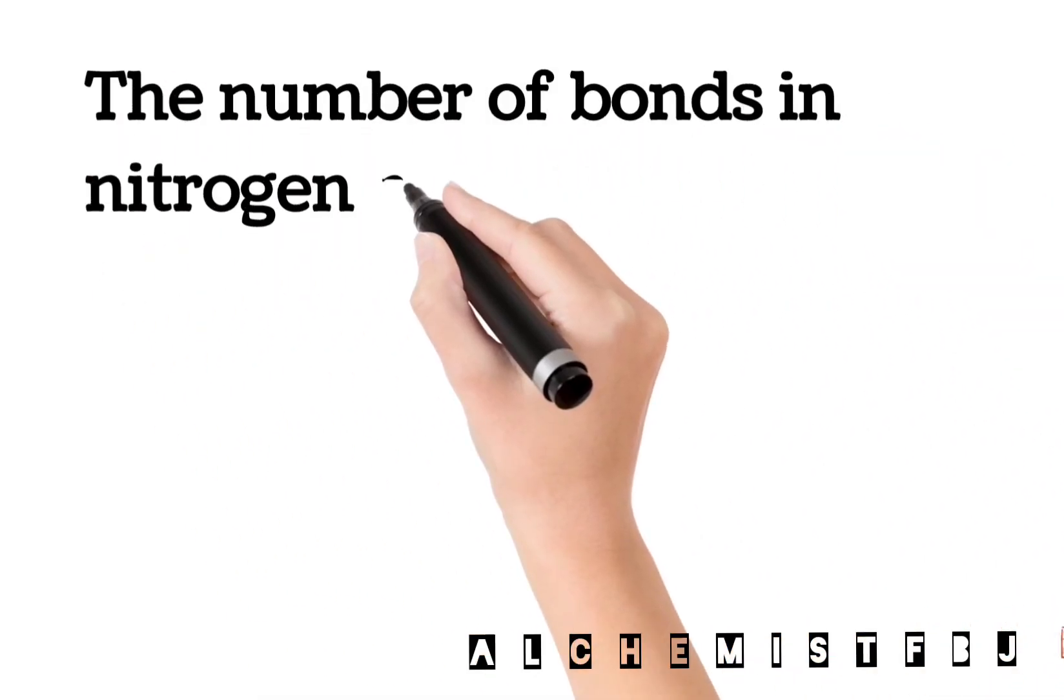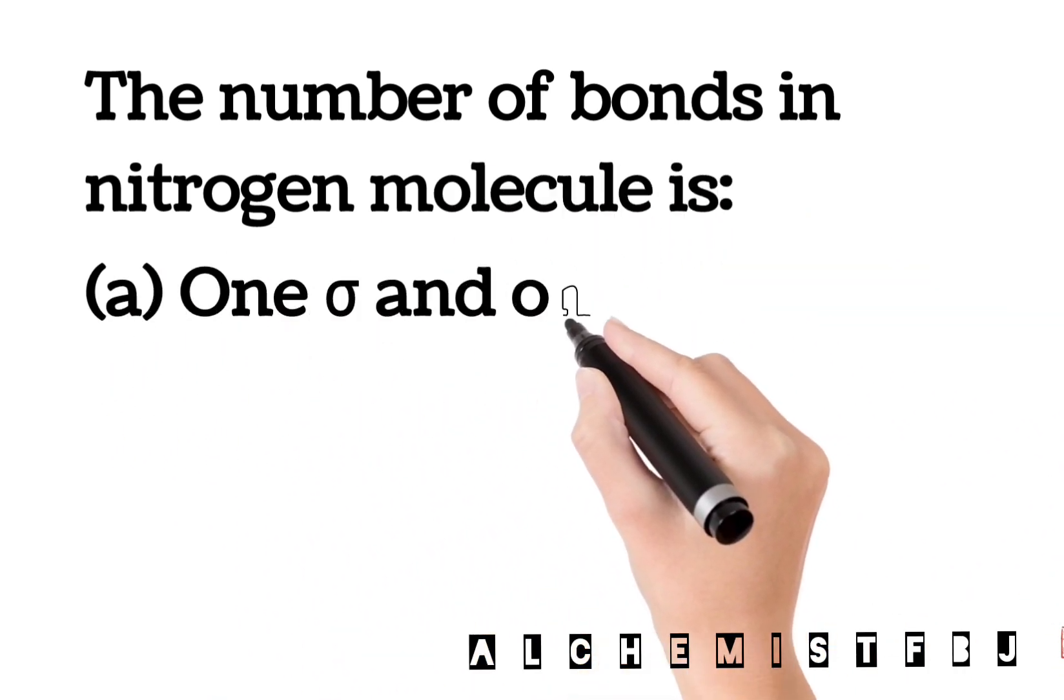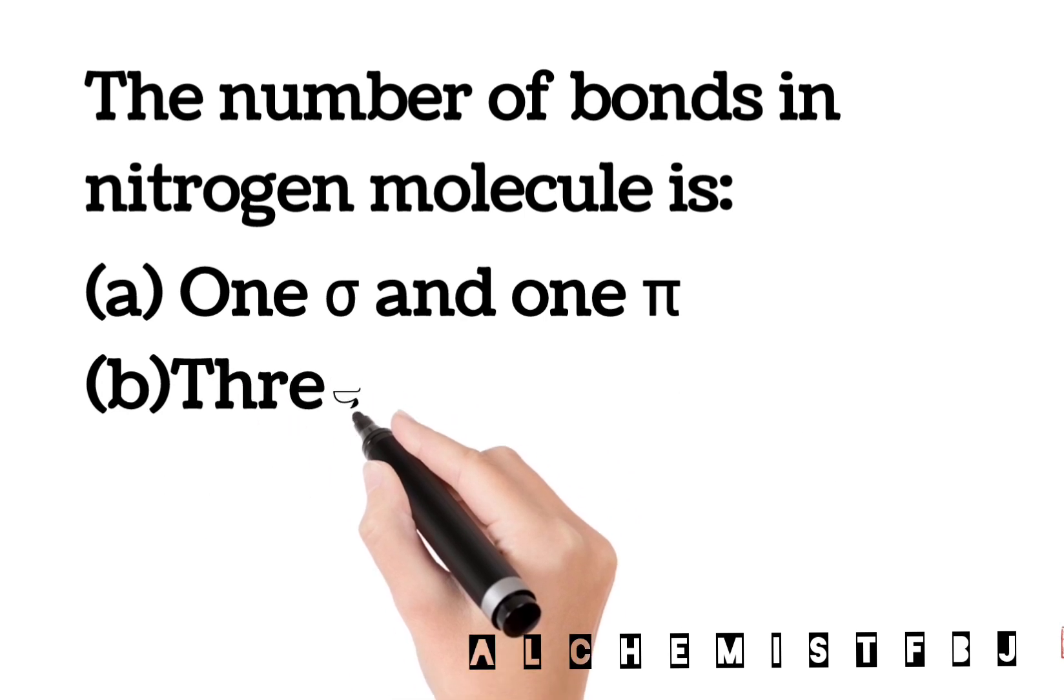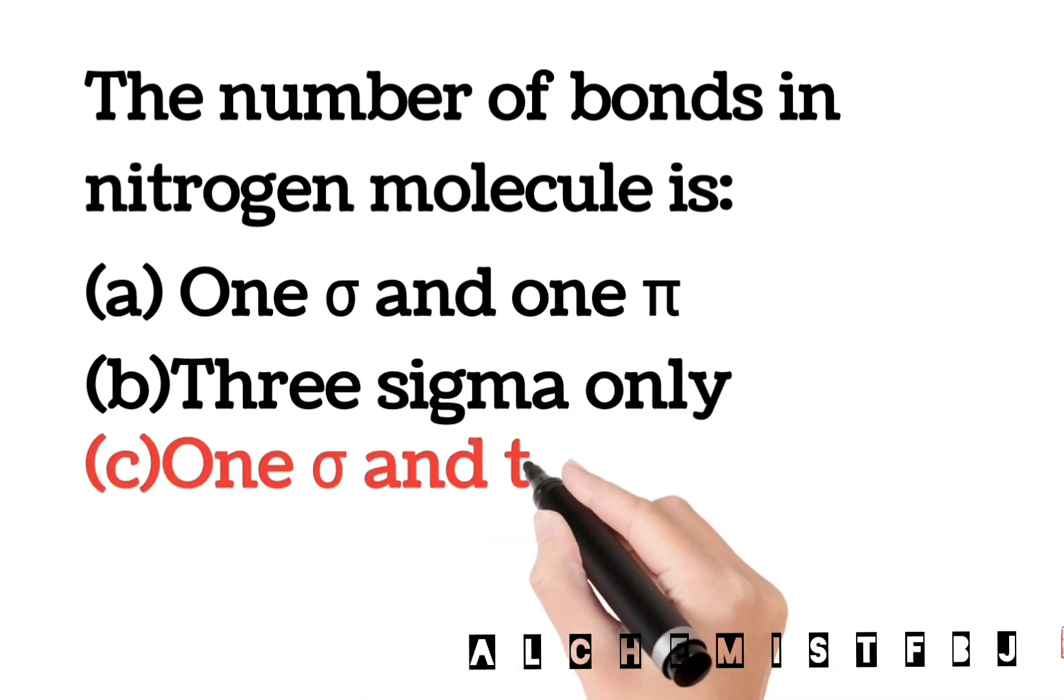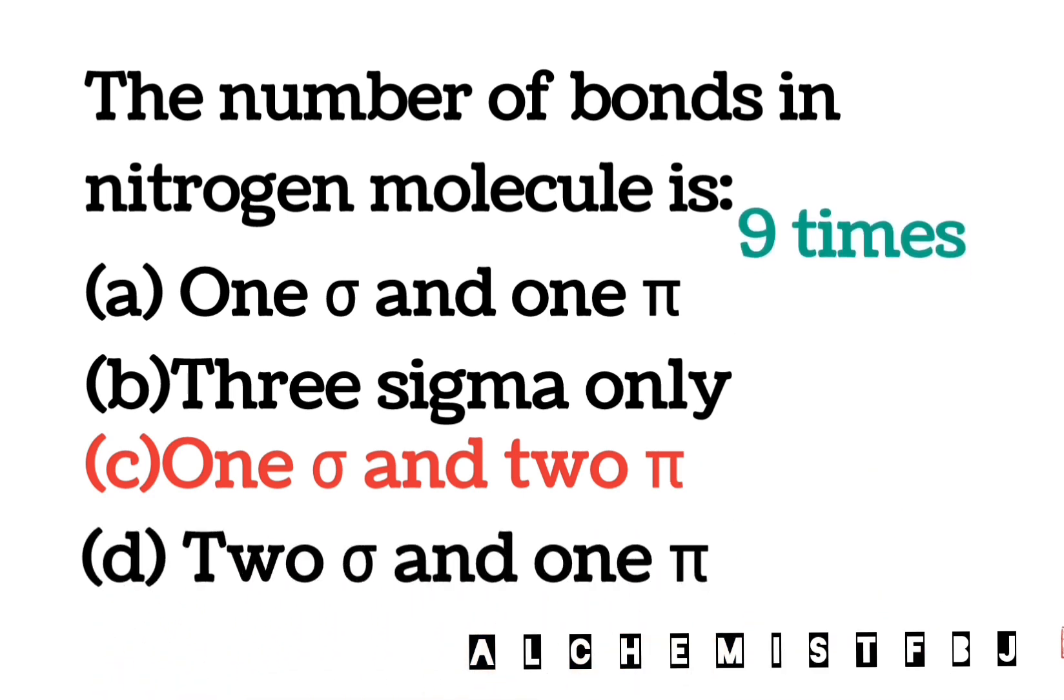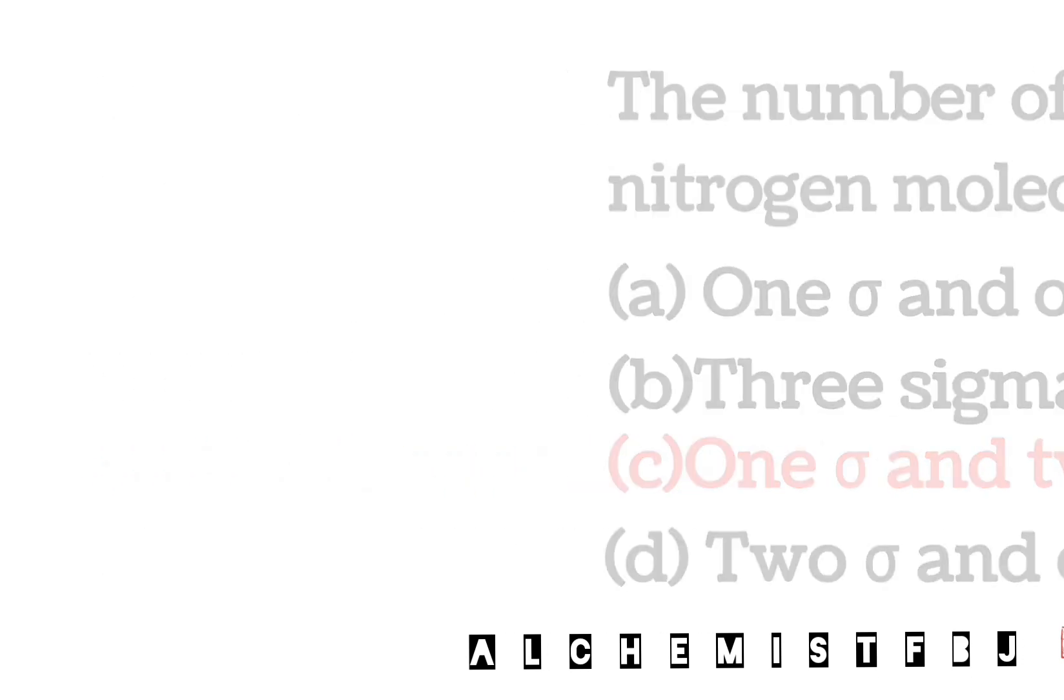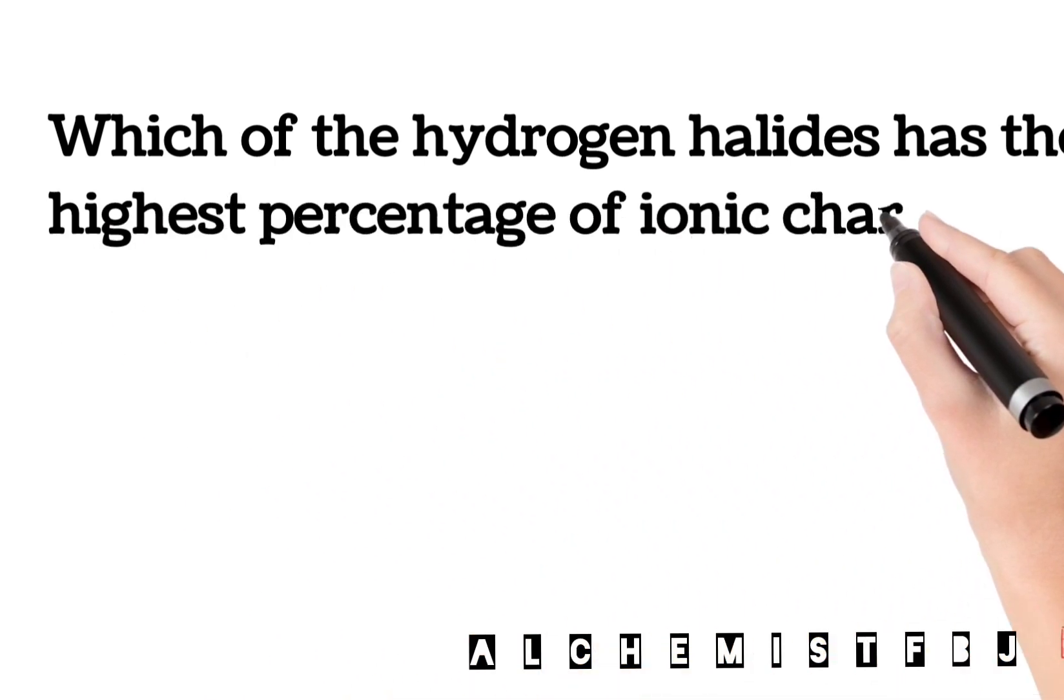The number of bonds in nitrogen molecule: Option A - one sigma and one pi, Option B - three sigma only, Option C - one sigma and two pi, Option D - two sigma and one pi. This is a 9 times repeated MCQ. Next, which of the hydrogen halides has the highest percentage of ionic character?